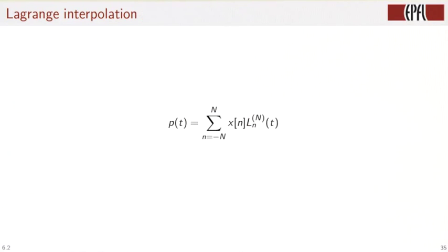So now we have a formula. p of t can be written as a linear combination of n going from minus n to n of xn, the samples, and the respective Lagrange interpolator of index n.